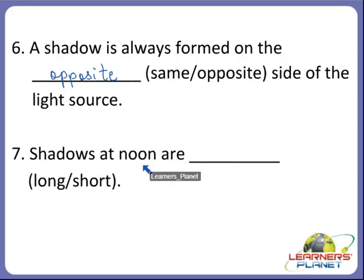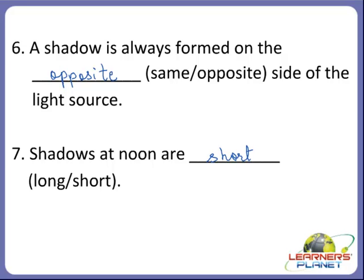Shadows at noon are dash — are they long or short? Shadows formed at noon are short. And shadows formed in morning and evening are long.